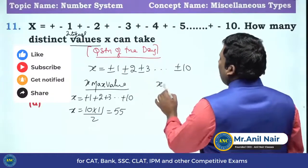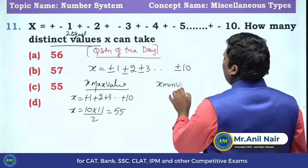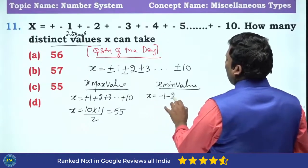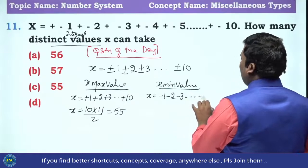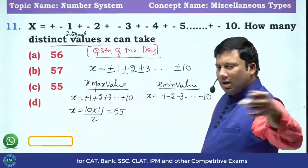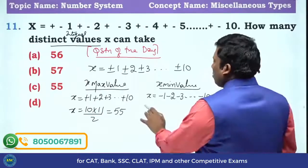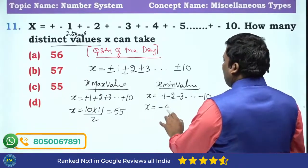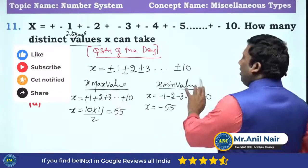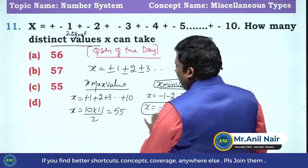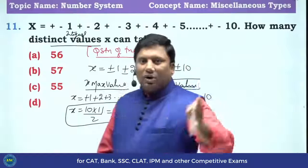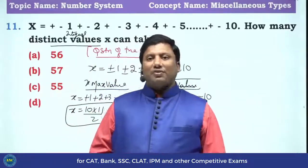When will the minimum value occur? The minimum value is when all of them are negative: minus 1, minus 2, minus 3, up to minus 10. All of them are negative, so the value goes to the left-hand side of 0. It is minus 55. The value of X oscillates between minus 55 and plus 55.